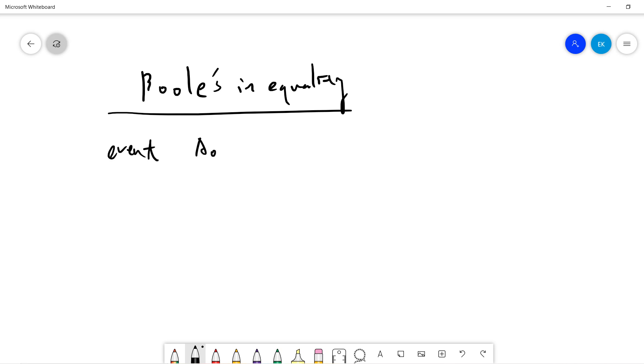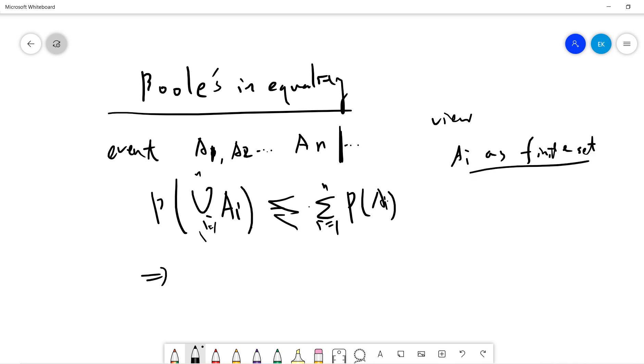Let's say you have events A0, A1, A2 up to An, so it's finite. Now we only focus on finite, and then you union all these events, and the probability will be less than P(Ai) from i=1 to n. If you don't know about probability theory then it's fine, you can just view all these Ai as finite sets.